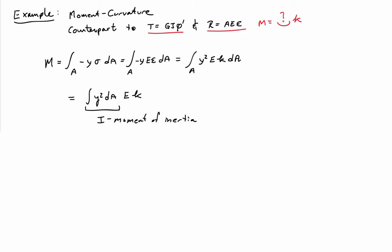E and kappa are assumed constant on the cross-section. We'll assume a homogeneous material. If I do that, I can pull the e and the kappa out, and I end up with the integral of y squared dA times e times kappa.